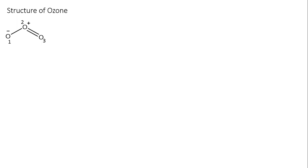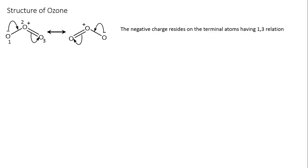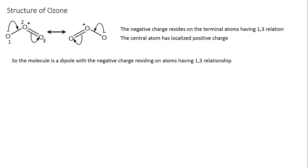Now let's see the delocalization of this negative charge over the ozone molecule. This negative charge will shift between the two terminal oxygen atoms, and the double bond will be shifted to the third oxygen. We will have the other resonance structure of this molecule as shown. The negative charge has gone to the third oxygen atom, and it will come back to the first oxygen atom as I have shown. The negative charge resides on the terminal atoms having a 1,3 relationship, and the central atom has the localized positive charge. The oxygen atom in the center has a positive charge in both canonical forms — it's not going anywhere.